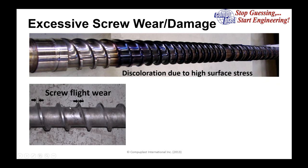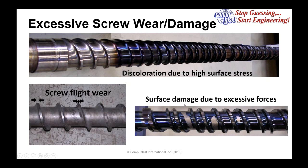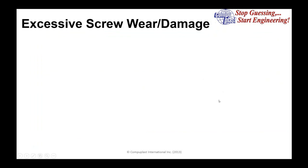Here you can see a screw toward the end of a barrier or groove feed section with a definite flight width that gets narrower until it's essentially a knife edge. The polymer pellets, due to high force, have actually worn away the flight of the screw. The surface damage shows the stress pulling off the chrome layer, exposing the metal underneath. This is a result of very high forces on the extruder screw.